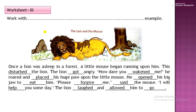All the stories are in past tense. Whenever we tell about something which is over, that is in past tense. Once, a lion was asleep in a forest. A little mouse began running upon him. He started jumping over his body. This disturbed the lion.